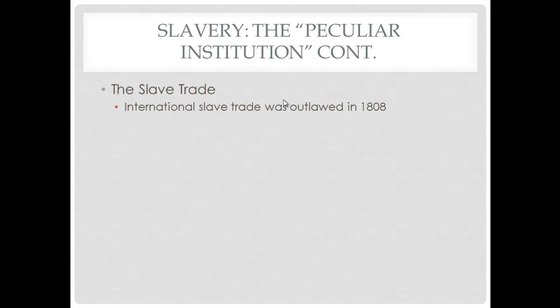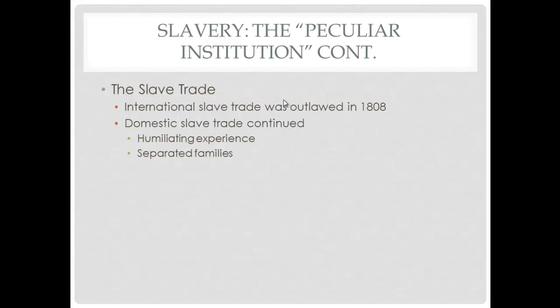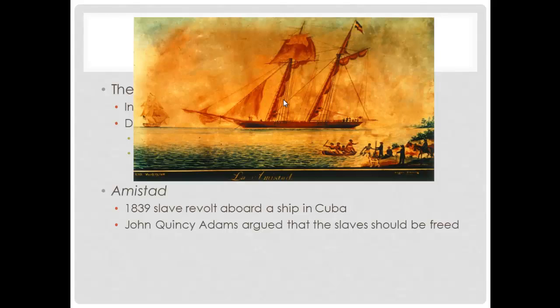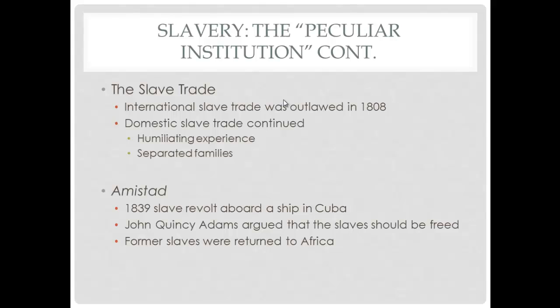The international slave trade was outlawed in 1808, meaning slaves could no longer be imported from foreign countries. But the domestic slave trade continued, which was an incredibly humiliating experience. One of the saddest consequences was families being broken up — mothers, fathers, and children separated. In the late 1830s, slaves revolted aboard the ship Amistad in Cuba and tried to sail back to Africa, but were caught off the U.S. coast. John Quincy Adams argued they should be freed, took the case to the Supreme Court, and won — the former slaves were returned to Africa.